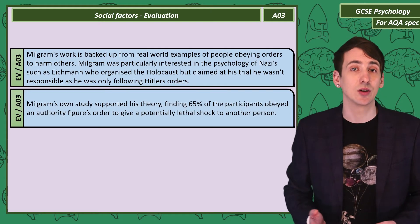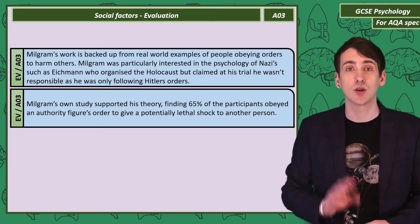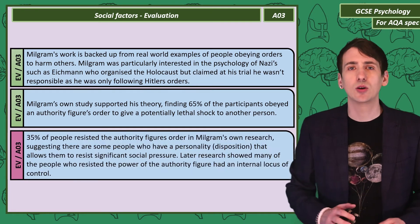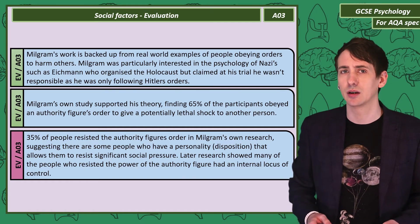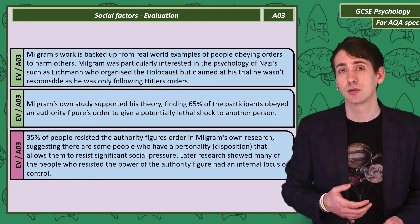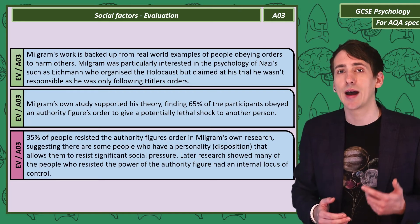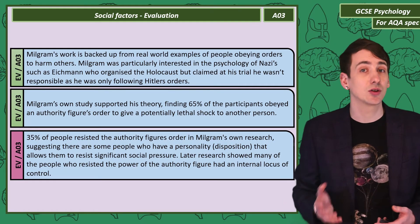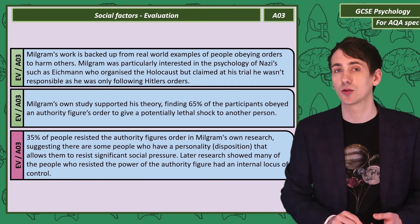Milgram's own study is evidence in support of his agency theory, finding that 65% of participants obeyed the authority figure to give a potentially lethal shock. However, all participants experienced the same social pressure to obey, yet 35% of people were able to resist the orders. The personality or disposition of these individuals may explain how they were able to resist. Later research showed that many of those who resisted had an internal locus of control.